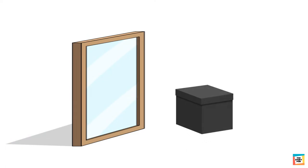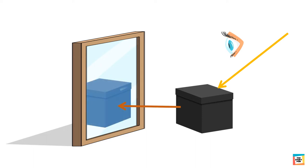When we put an object in front of a plane mirror, light rays that fall upon the object are reflected by the mirror into our eyes. The mirror forms an image of the object.